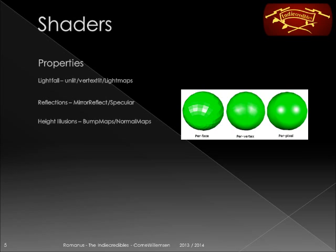A couple of shader properties that are important to know is how the light falls. We can have per-face fall, we can have per-pixel fall, we can have per-vertex. We're going to use per-pixel because this allows for the nicest kind of shadows in my opinion.